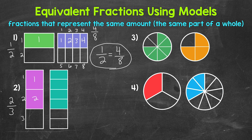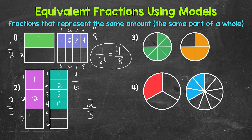Now as for the rectangle on the right, that's been divided into six equal parts, so six is our denominator. And four parts have been shaded in, so four is our numerator. Four sixths of that rectangle is shaded in — that rectangle is representing four sixths. That means that two thirds and four sixths are equivalent fractions.